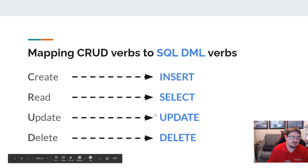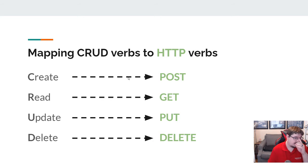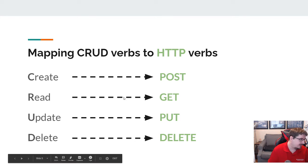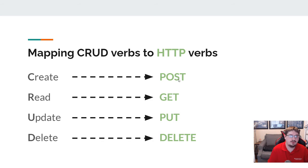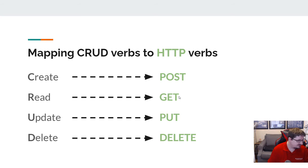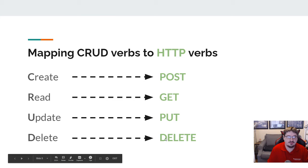These are the ones we're interested in when dealing with the data. We can also map CRUD onto our HTTP verbs. If we say we want to create data, that's POST. Reading maps to GET. If we want to update data, we'll use PUT. And if we want to delete data, we'll do DELETE.